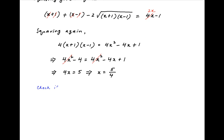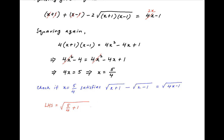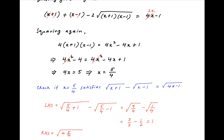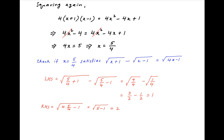Now we will check if the solution x equals 5/4 satisfies the original equation. Substituting on the left-hand side, we get the square root of 9/4, which simplifies to 3/2 minus 1/2, which equals 1. Putting x equals 5/4 on the right-hand side, we get the square root of (4 × 5/4 − 1), which equals the square root of 4, which equals 2.